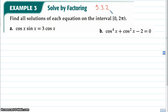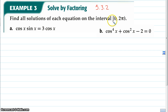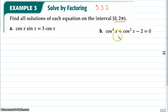In Example 3, we have two different equations. Each of them are going to show us two different types of factoring methods. Just note that we're only finding solutions from 0 to 2π for these, because both equations involve sine or cosine. So let's start with letter A.